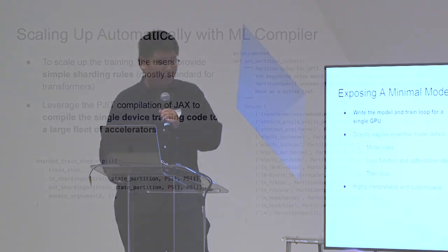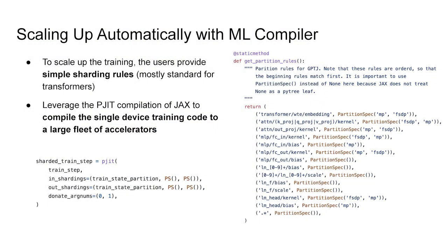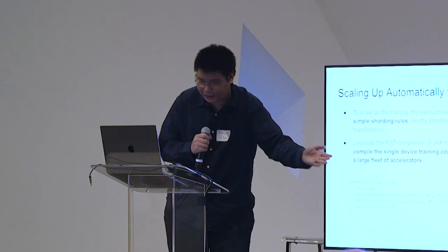But how do we scale it up? We scale it up automatically with a modern machine learning compiler. Since EasyLM is built on JAX, we're able to leverage JAX's parallel JIT compiler to automatically transform the simple training loop we defined into scalable multi-host, multi-accelerator programs. The first step is for the user to simply provide what's called a sharding rule. These sharding rules are mostly standard for modern transformers — you can just copy them from somewhere else and don't have to write them yourself. Once you have the sharding rule, you use the compiler to directly transform the single GPU program into a scalable program.